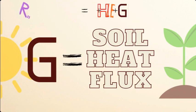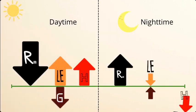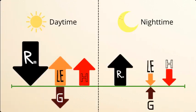Now I'm going to show you a diagram. You can see it's daytime versus nighttime of all of the net radiation equal to the fluxes. During the daytime, net radiation is typically directed towards the surface and the other fluxes are away from the surface. In the nighttime, the fluxes are in the opposite directions.